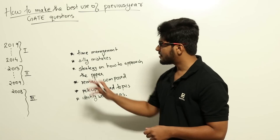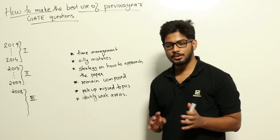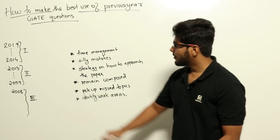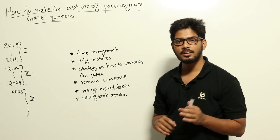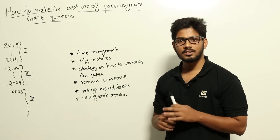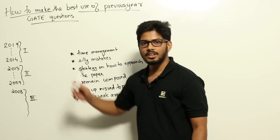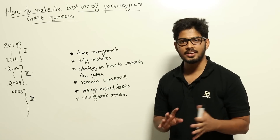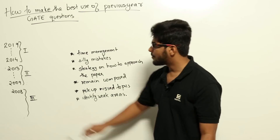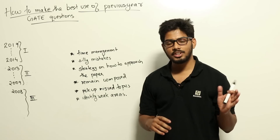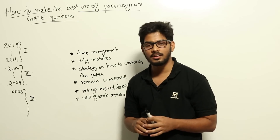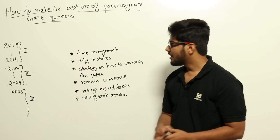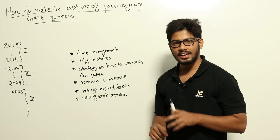The strategy I followed was to start solving question papers from 2011 onwards. First, you should finish your entire syllabus without skipping any part. While studying, don't look at or solve previous year question papers — save them for the end of your preparation. If you are following video lectures, the instructor may solve one or two previous year questions per topic, and that is fine, but don't solve papers beyond that. After finishing all topics, then come to the previous year question papers.